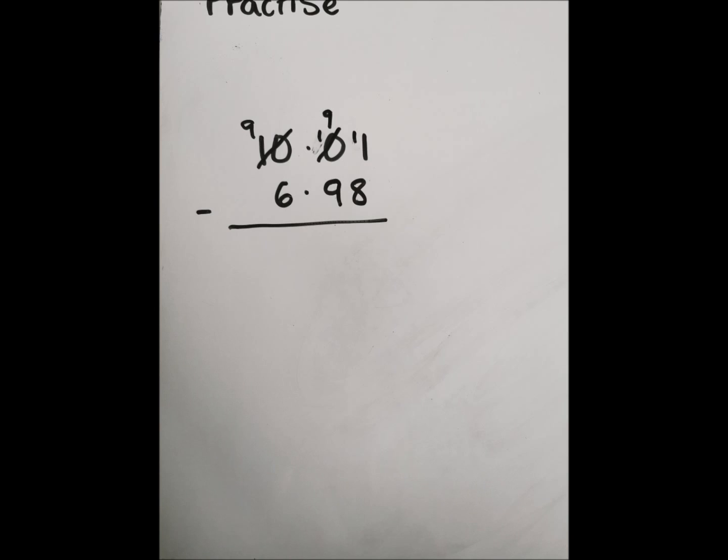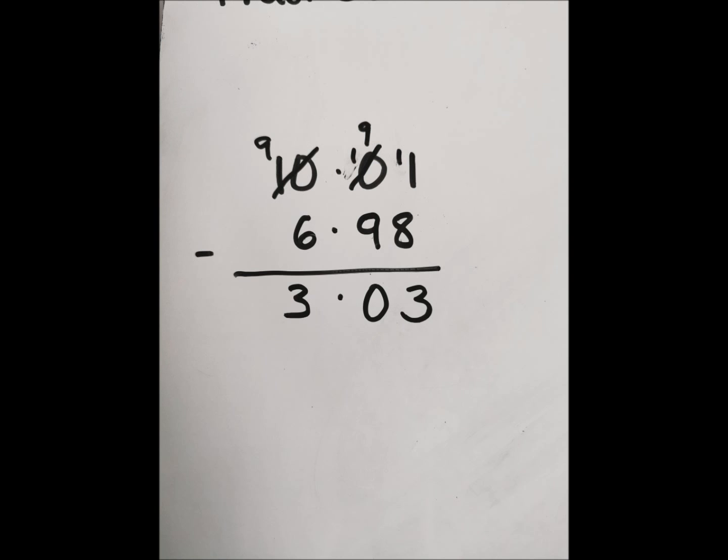We can then borrow from the tenths column, making that a nine and moving a one over. So, that borrowing requires a couple of extra steps there. It's not as straightforward as just jumping straight from the tens column all the way back to the hundredths column. There are a few steps involved. So, now we have 11 take away 8, which is 3. 9 take away 9, which is 0. And then 9 take away 6, which is 3, giving us our 3.03.